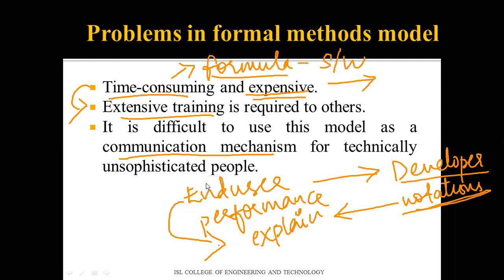The formal methods model is also expensive because running multiple mathematical reductions requires more CPU time and more RAM.